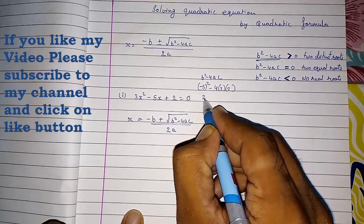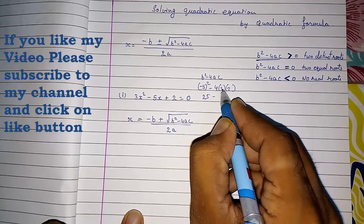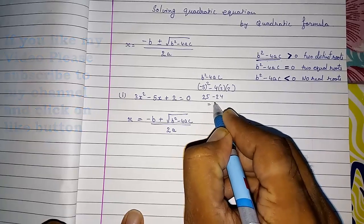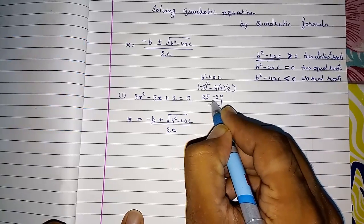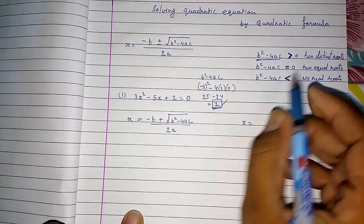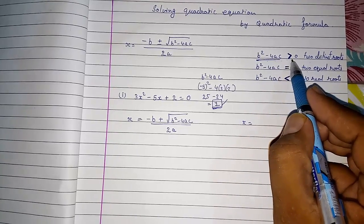So 5 square will be 25 minus, 4 into 3 is 12 into 2 is 24. So here we got b square minus 4ac is 1. So it is a positive number. So it is greater than zero.